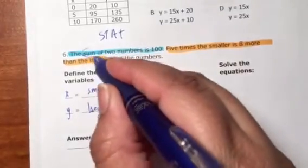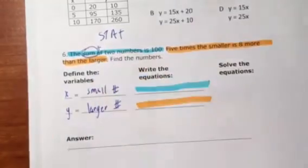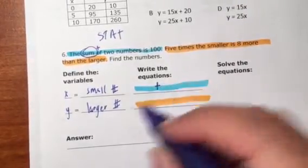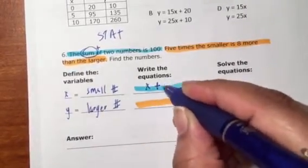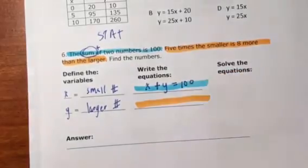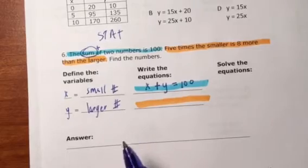Let's talk about the blue equation first. You should know that sum means addition. So it's saying we're going to take the sum of two numbers. Well, our two numbers are the small number and the large number, and that equals 100. There's our first equation. That's it.